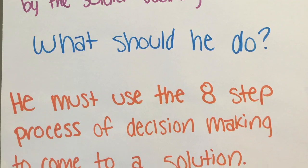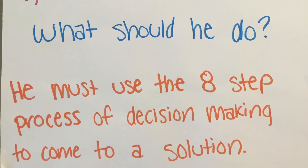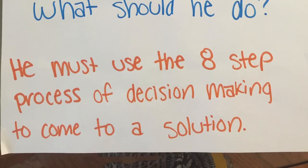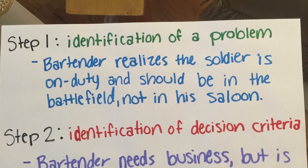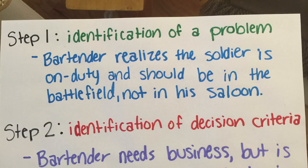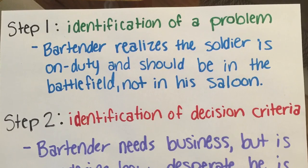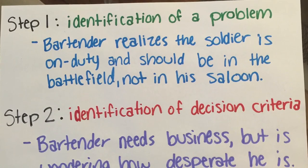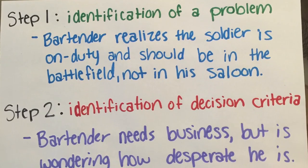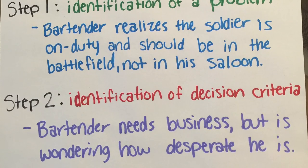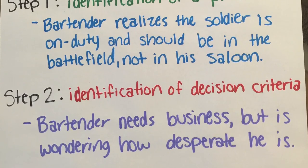He must use the 8-step process of decision-making to come to a solution. Step 1: Identification of a problem. The bartender realizes that the soldier is on duty and should be on the battlefield, not in his saloon.